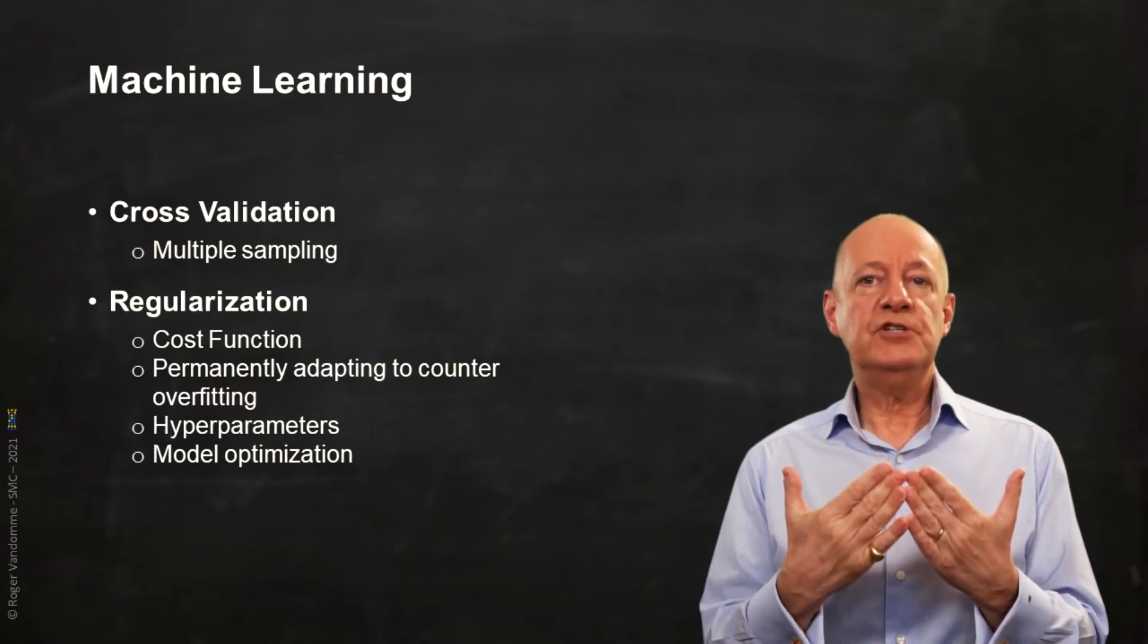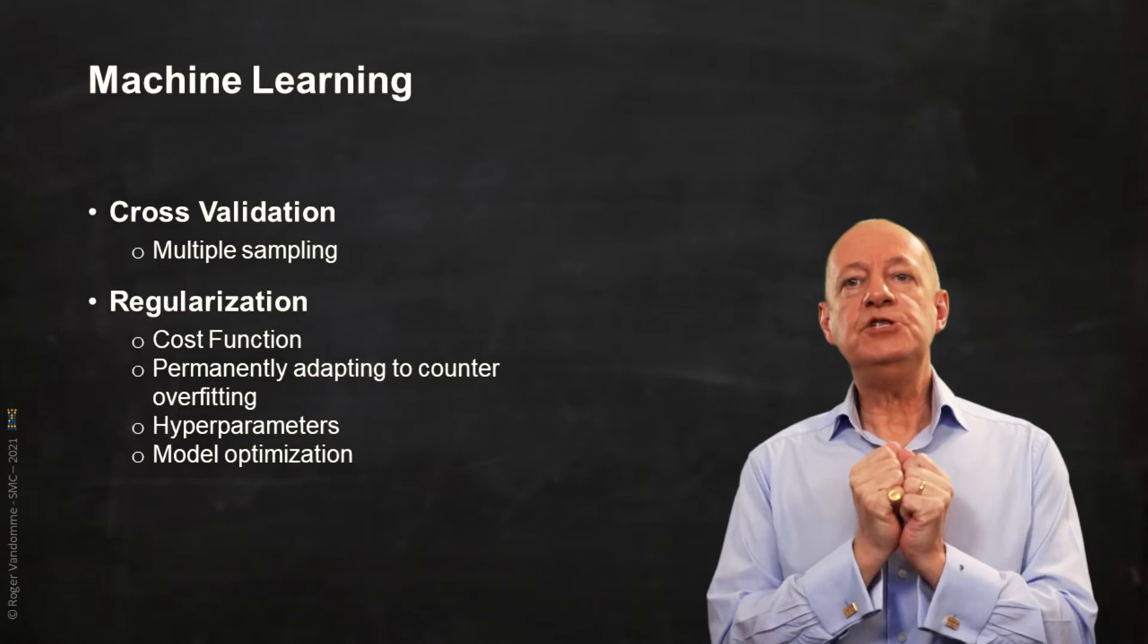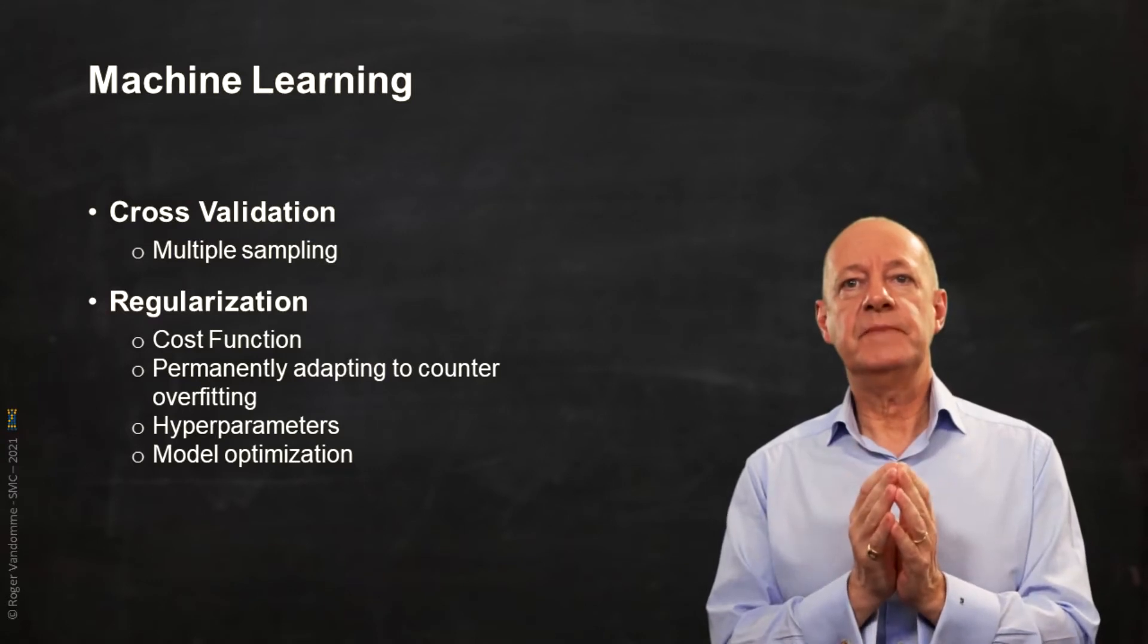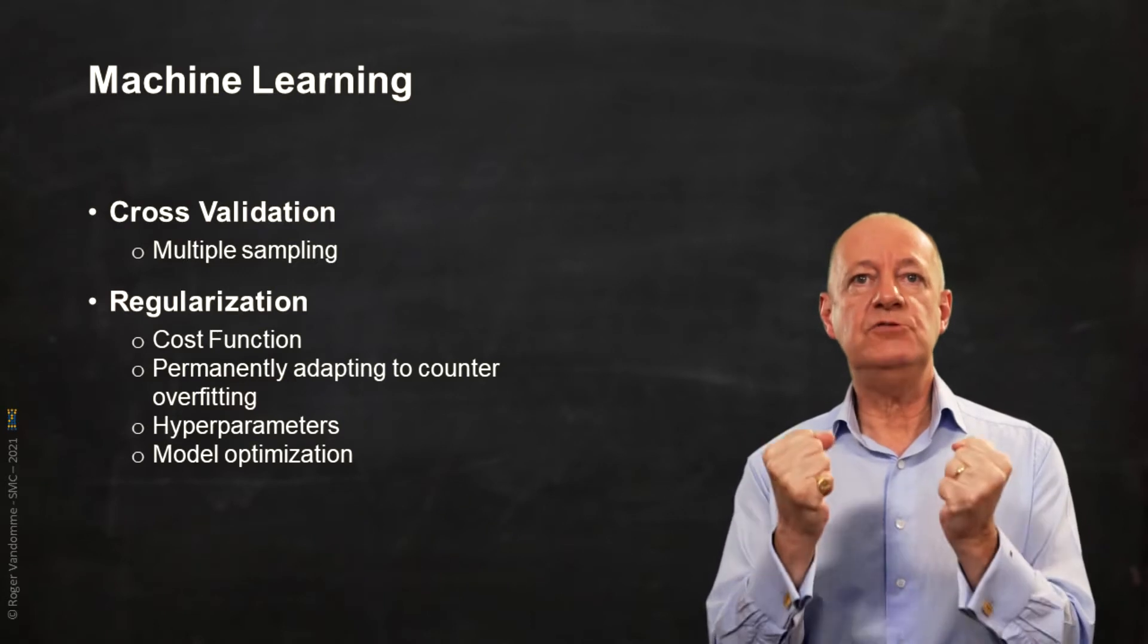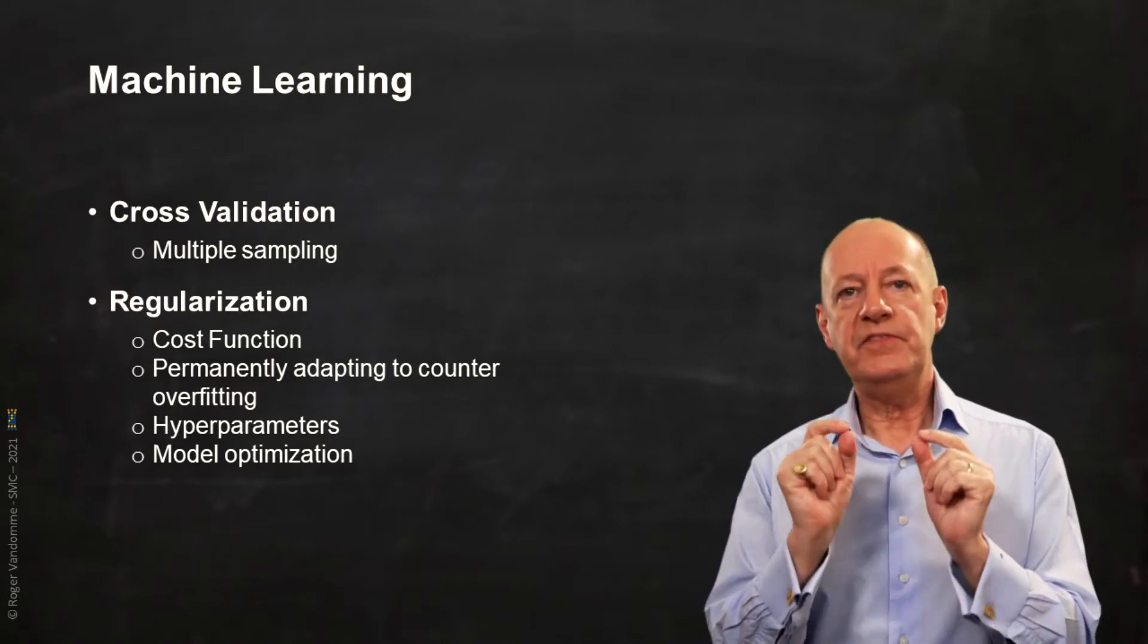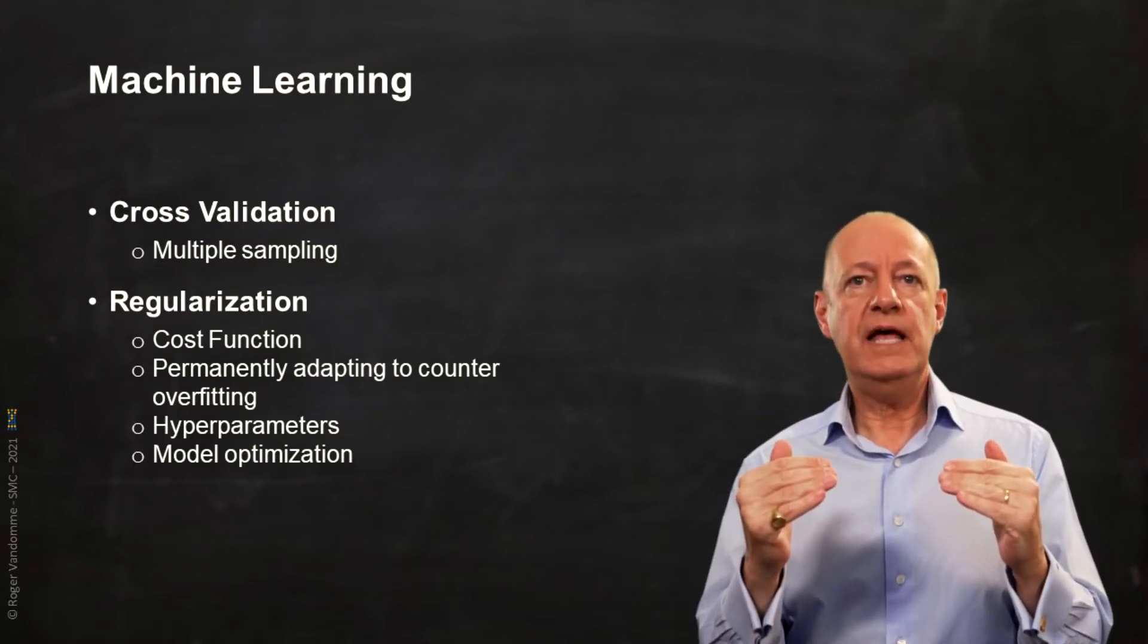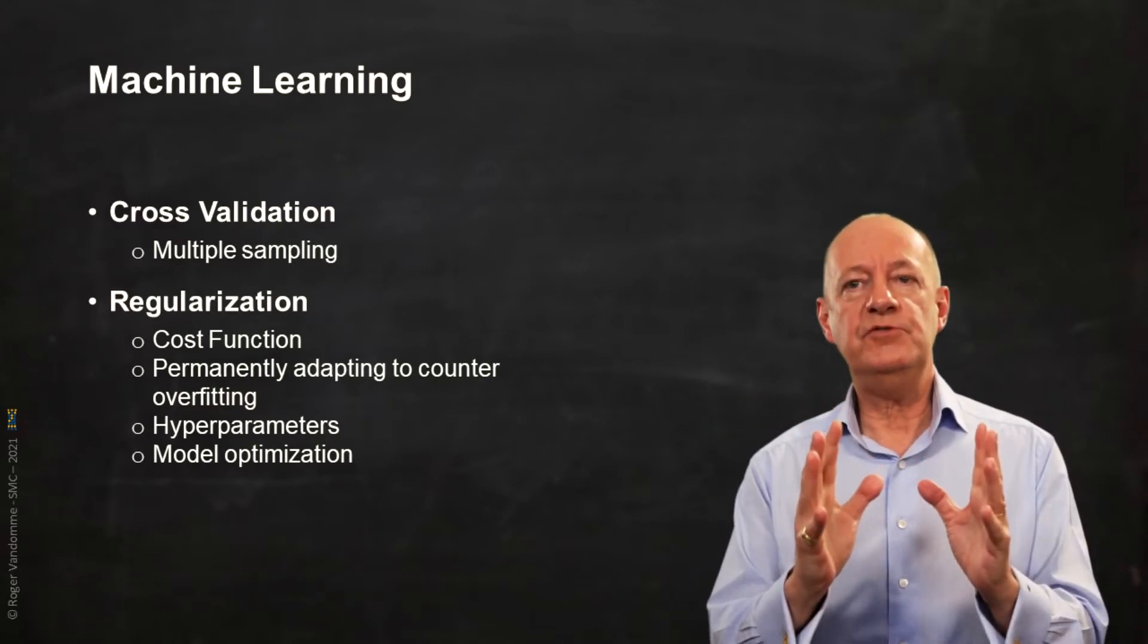If the cost function, in this case the minimization of distances, is to be pushed too far, we run the risk of overfitting. That is why we will voluntarily penalize the cost function so that it is never perfect.